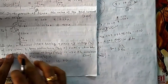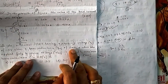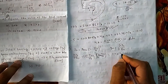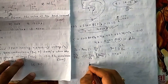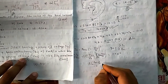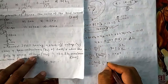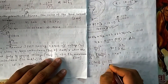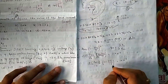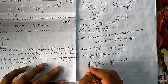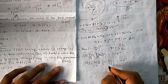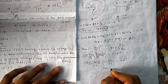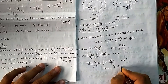Substituting the known values — g_m = 1×10⁻³, V_GS = −3, V_P = −5 — into the g_m expression and solving, accounting for the signs carefully, gives I_DSS = 6.25 mA.